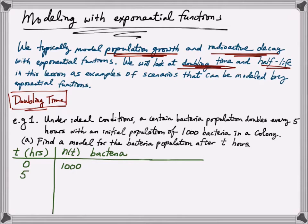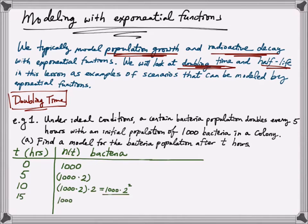Since the population doubles every 5 hours, after 5 hours when T equals 5, we have 1,000 times 2 — double the starting amount. After another 5 hours, when T equals 10, we have 1,000 times 2, then multiplied by 2 again, which we rewrite as 1,000 times 2 squared. After another 5 hours at T equals 15, the population doubles again: 1,000 times 2 squared times 2, rewritten as 1,000 times 2 cubed.